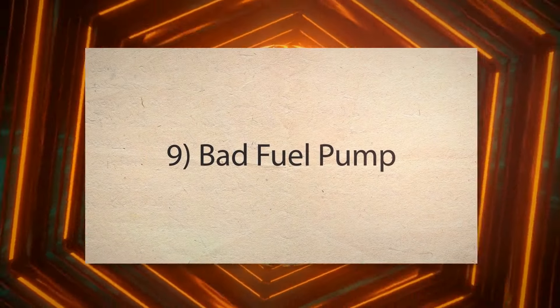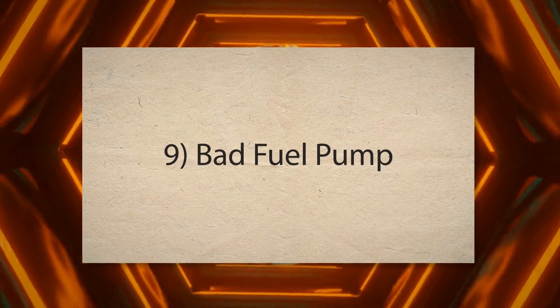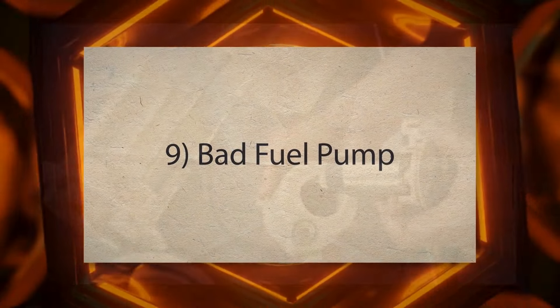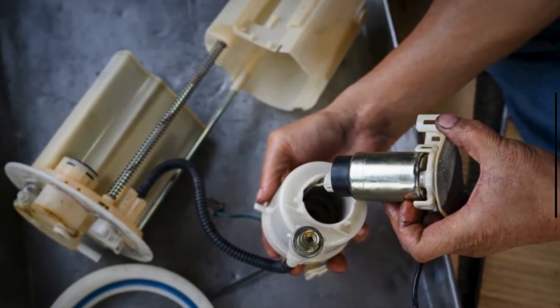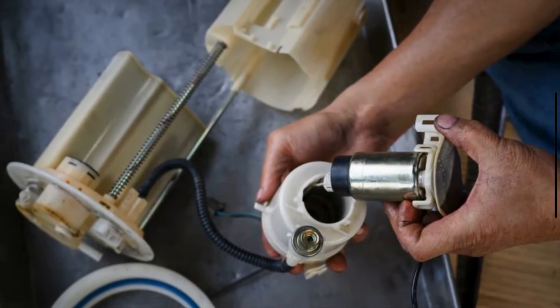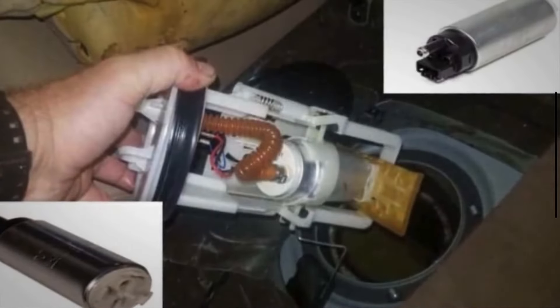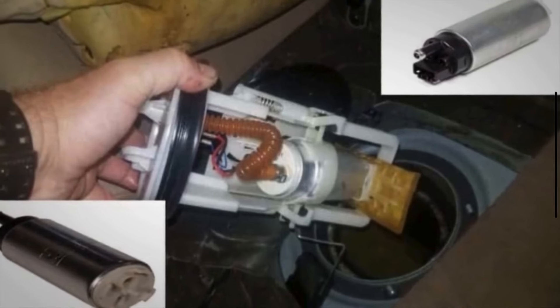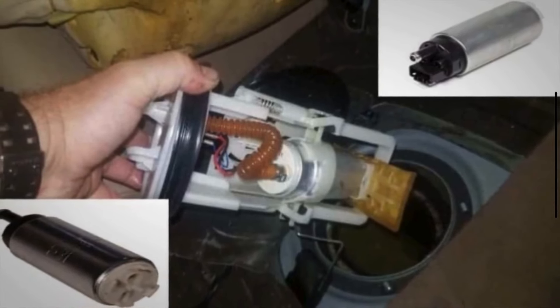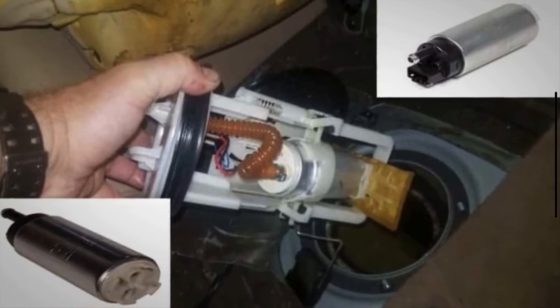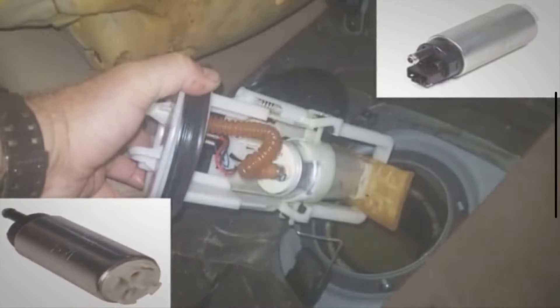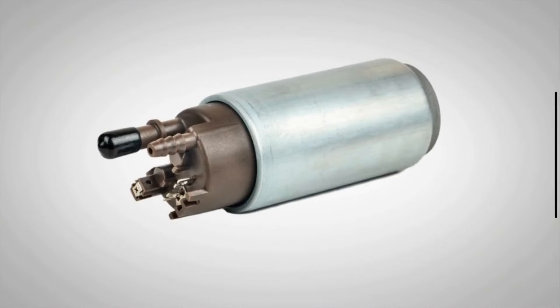9. Bad Fuel Pump. The fuel pump of your vehicle is installed to ensure the proper supply of fuel to the engine. A bad fuel pump can cause inconsistent fuel pressure, which may lead to fluctuations in the air-fuel mixture and erratic idling.